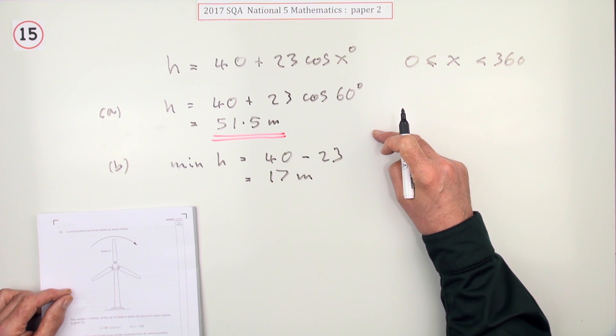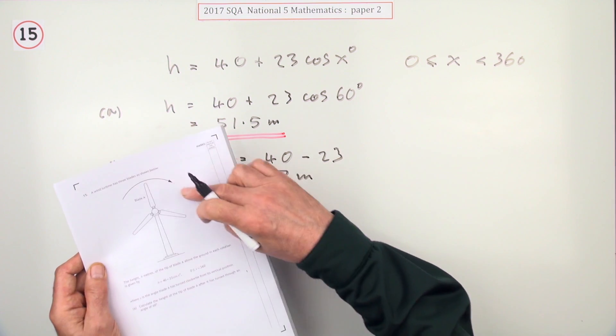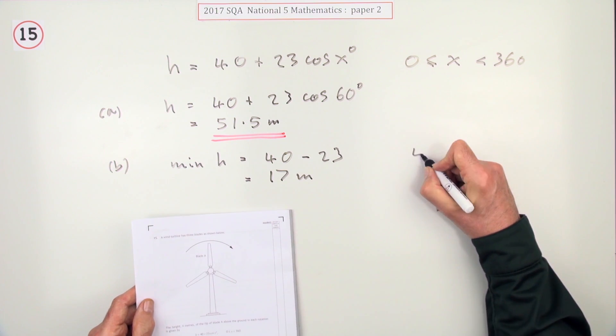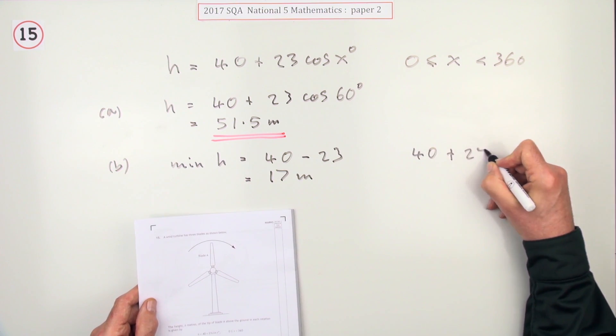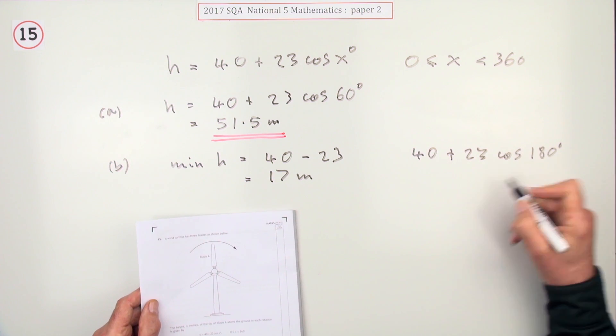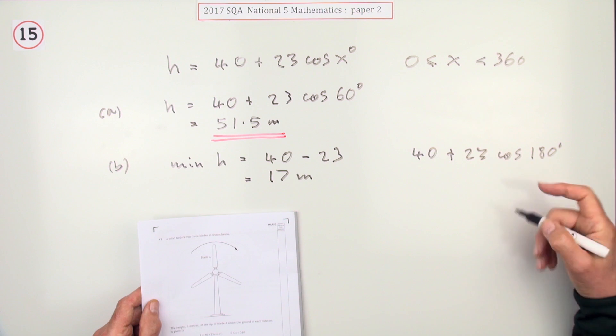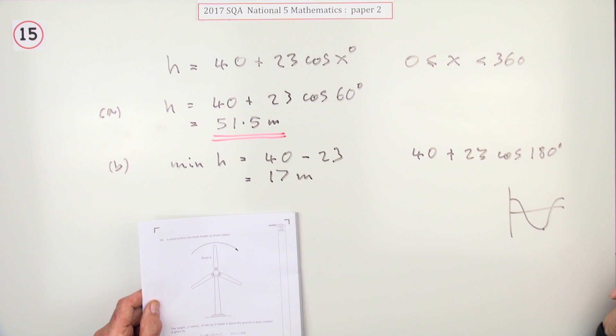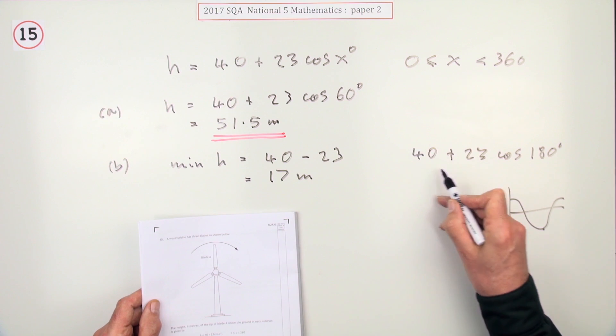Or you could do it via calculation, saying well it'll be at the bottom when x goes to 180. And then do 40 plus 23 cos 180. And either type that in and you'll get 17, or you could think, oh, the cosine, it looks like this, so it'll be down at negative one there. So again you've got 40 minus 23.